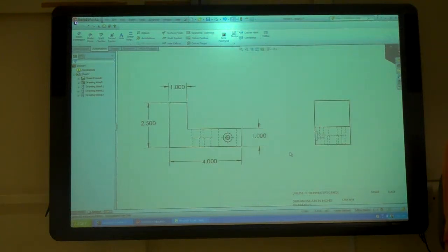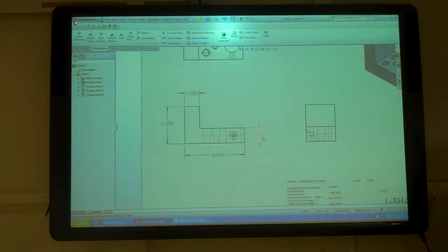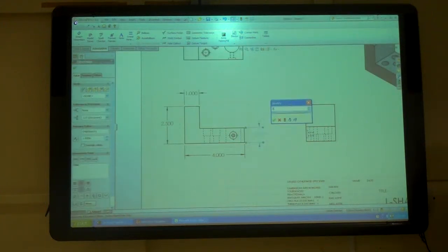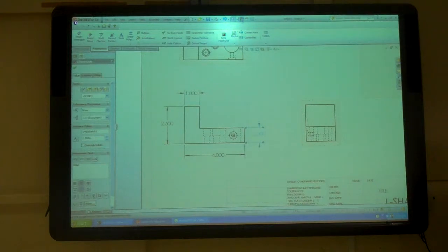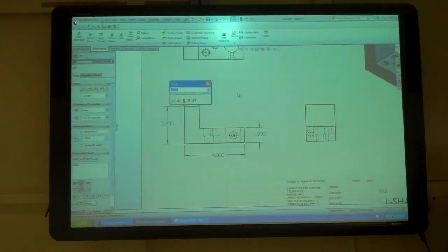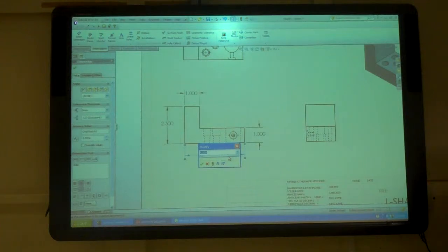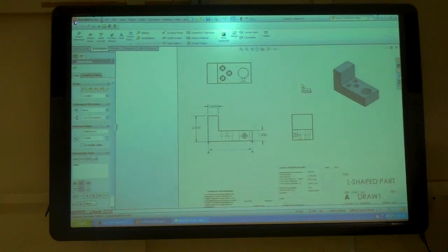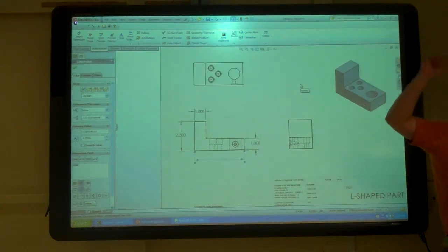So these, because we brought in these dimensions from the model, if I double click on it, I change that number, I hit update, the part updates. Change it back, hit update. So that's the power of putting the model dimensions in.